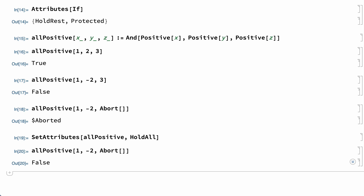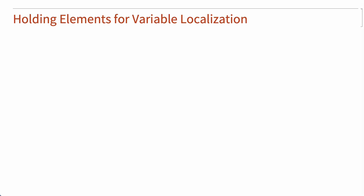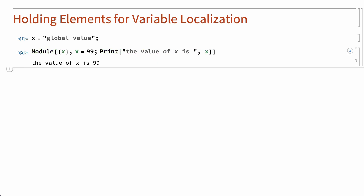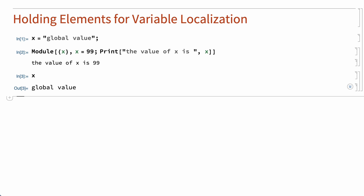In addition to the reasons for holding elements unevaluated in functions like And and If, elements are also held unevaluated by functions that localize variables, by iteration functions, and by functions that assign values to variables. Variable localization can only be done if elements containing the local variable are held unevaluated. For example, these inputs show the Module function behaving as intended, localizing a variable to a short program, and leaving the global value of the variable unchanged.